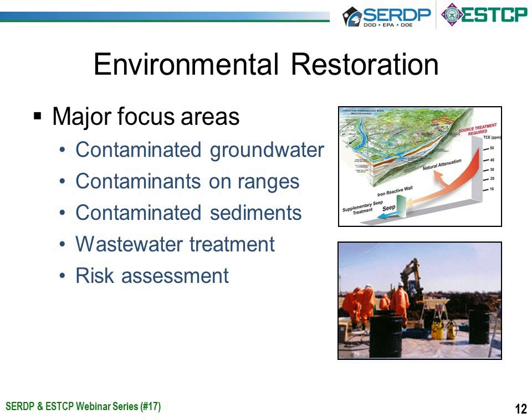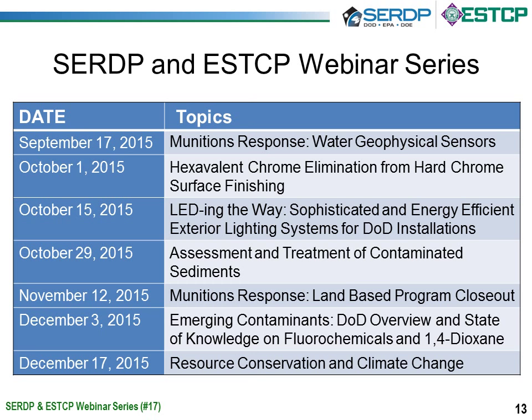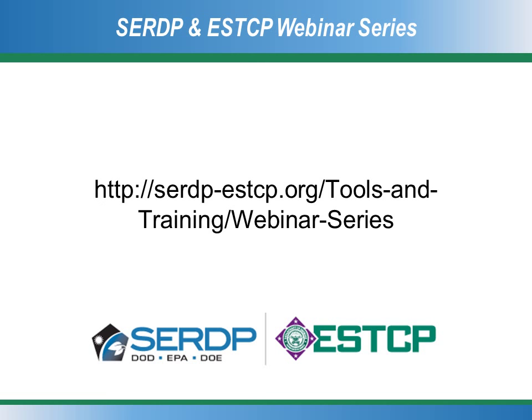Our webinar today is focused on research and demonstrations conducted under the Environmental Restoration Program area, which has five main areas: contaminated groundwater, contaminants on DOD testing and training ranges, contaminated sediments, wastewater treatment, and risk assessment. Our webinar series will highlight research and demonstration efforts from each of these five program areas, covering a broad range of topics including munitions response, hexavalent chrome elimination, and emerging contaminants. The next webinar on environmental restoration will be on October 29th, focusing on assessment and treatment of contaminated sediments. Registration is now live for the next webinar on underwater geophysical sensors on September 17th.